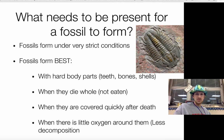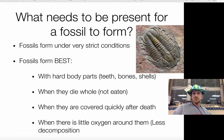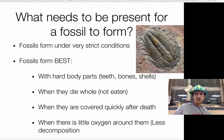Fossils also form best when they get covered up quickly after dying — again, this is kind of rare. How often does something die on the side of the road and then get covered by a ton of sand? Not very often. So it has to get covered very quickly after death. And that leads into the very last thing: they form best when there's very little oxygen around them, because oxygen helps decompose things. So if all four of these things happen, you might get a fossil. Think about how rare that is in nature. Jellyfish don't have hard body parts, so they probably don't fossilize. A lot of things die and get eaten, or die out in the middle of nowhere where they won't get covered up. And some things die in high-oxygen environments. If you die in a swamp and sink to the bottom where it's lower in oxygen, you might fossilize — but most things on earth do not become fossils.